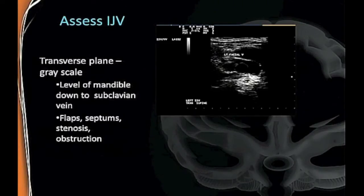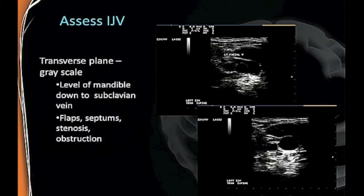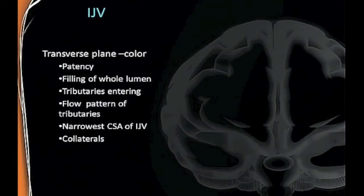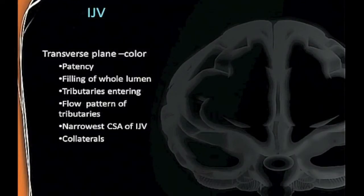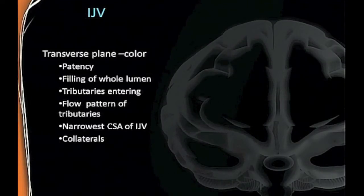Here you can see the left facial vein entering the jugular. Then in color, you're going to look for patency—you want to see the whole lumen, look for flow patterns in the tributaries, and identify which is the narrowest point. You're going to pan from top to bottom in color to check and also look for collaterals at the same time.